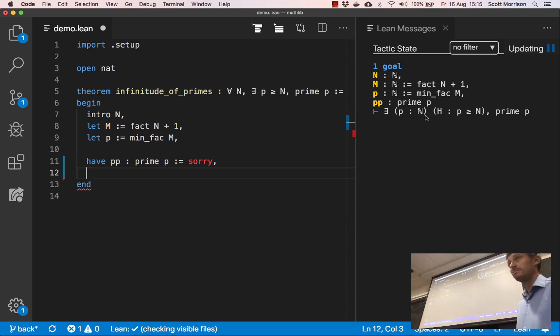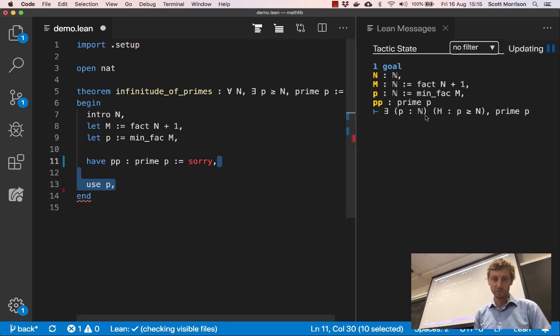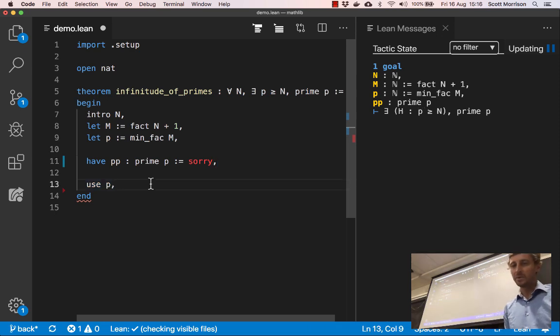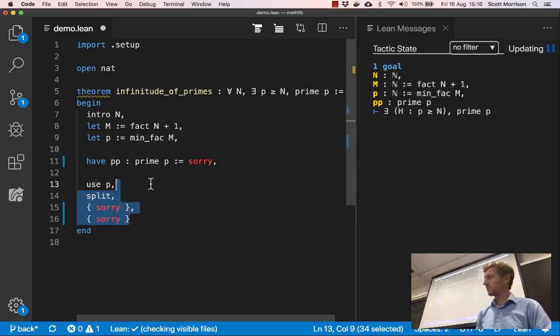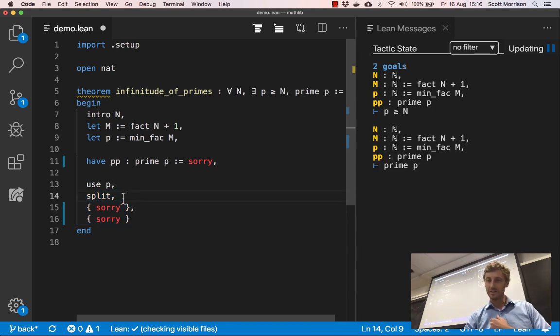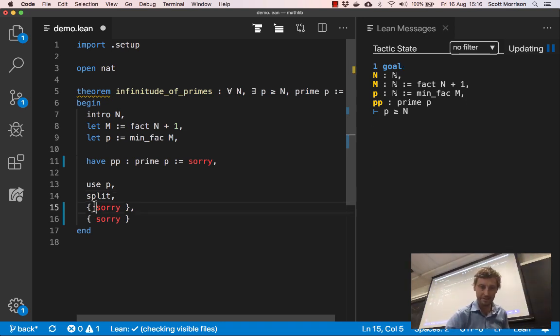So what do we do? Well, we say, let m be n factorial plus one. So you do need to somehow know that fact is how this language expresses factorial. But as soon as we say that, we have a new hypothesis, m, which is defined as we said. And then we do another let, we let p be the minimum factor of that m. So again, you need to be able to look up what minfac is. But if I put the cursor over it, I do get a little helpful piece of text telling me what that function does. It takes an actual number and returns the smallest prime factor, assuming at least n isn't one, in which case maybe its behavior is undefined.